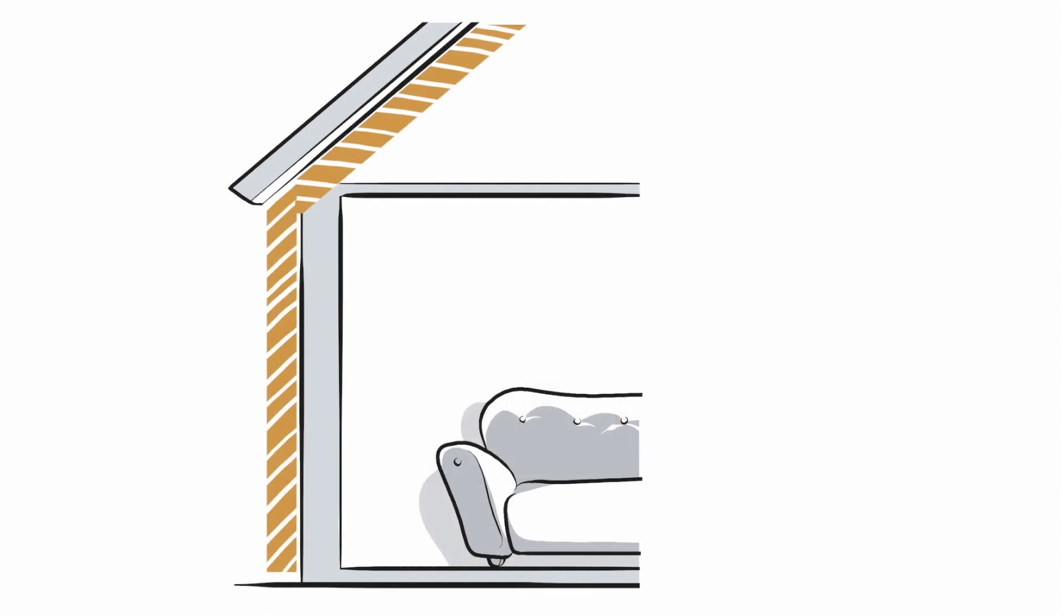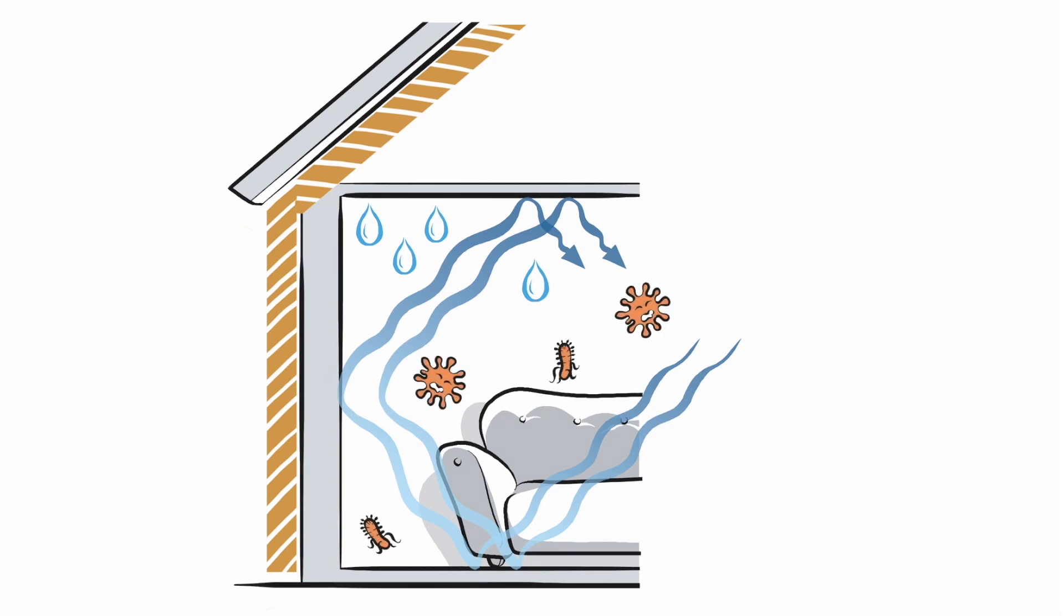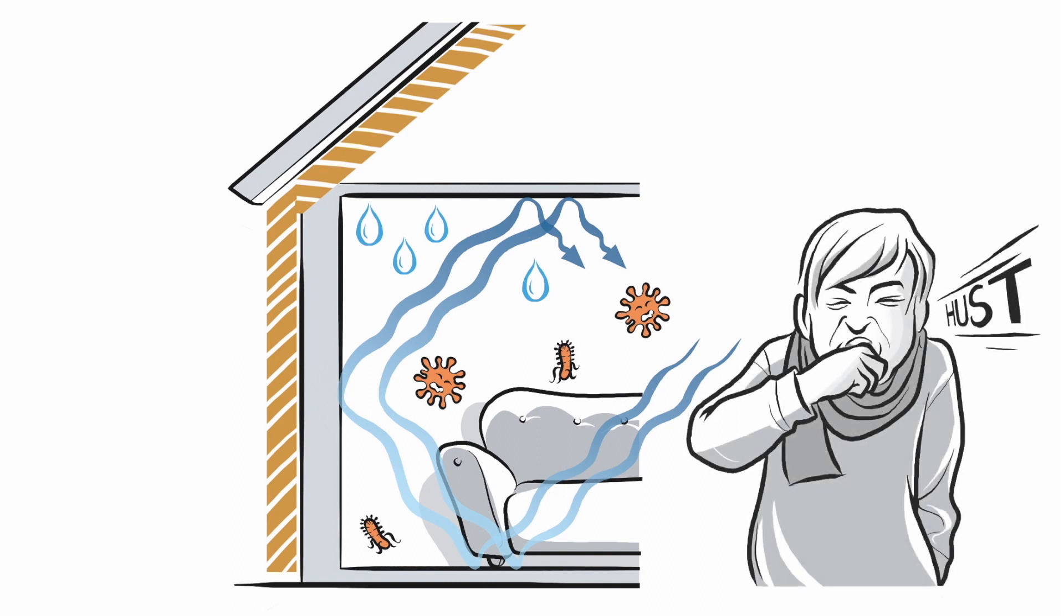But the intense insulation of the buildings also brought about quite a number of problems. As the insulation led to vapor-proof walls, the result was that smells and harmful substances which are generated in each and every house stayed inside. As a consequence, it was easy for mildew and mites to spread in the house, thus endangering the health of its occupants.